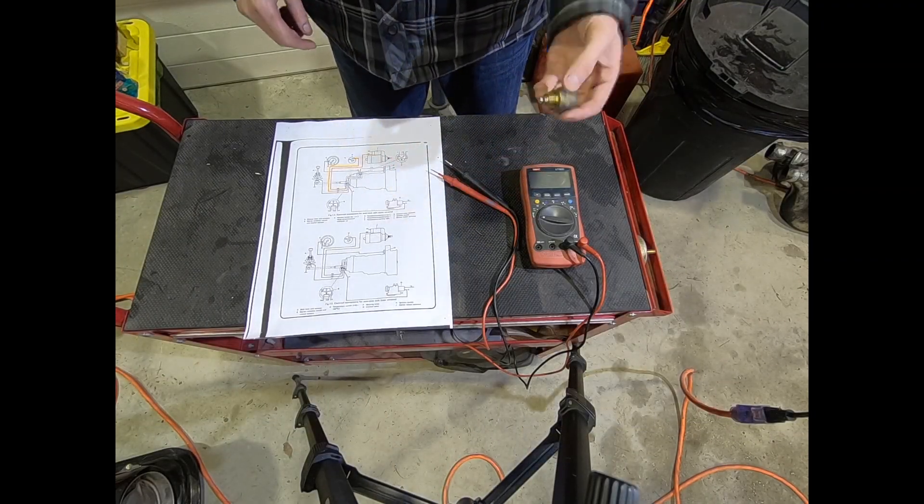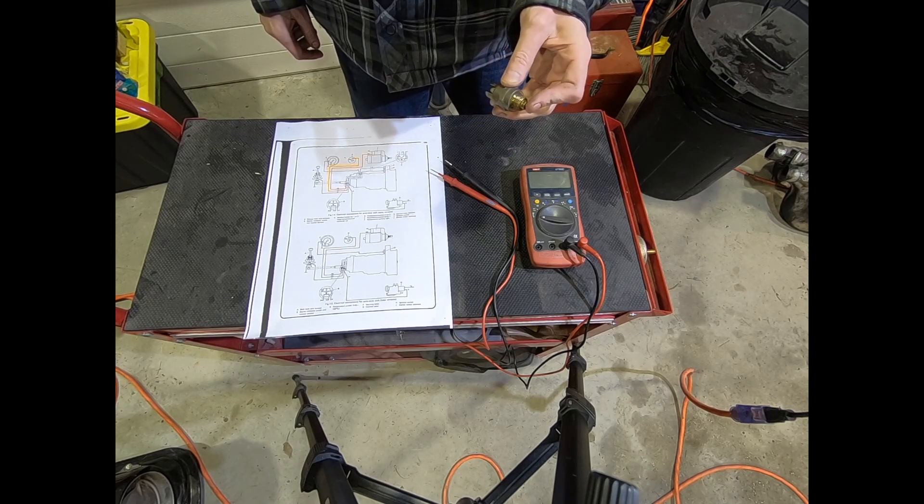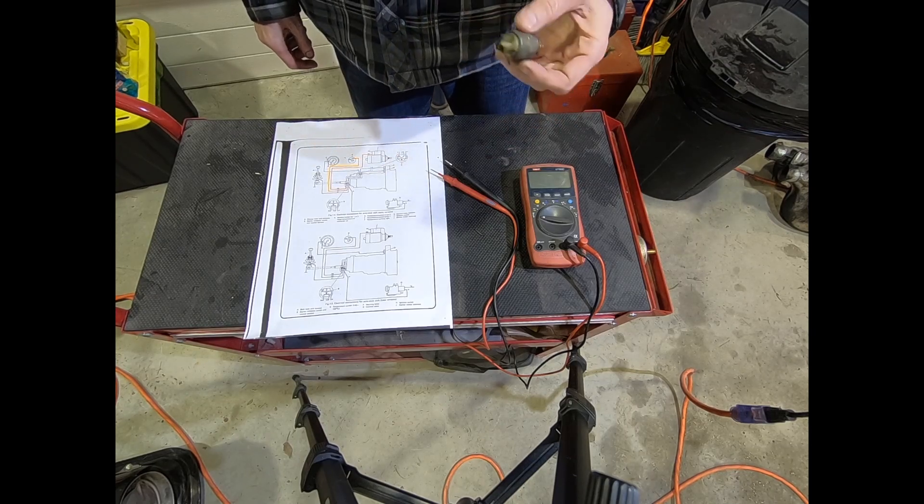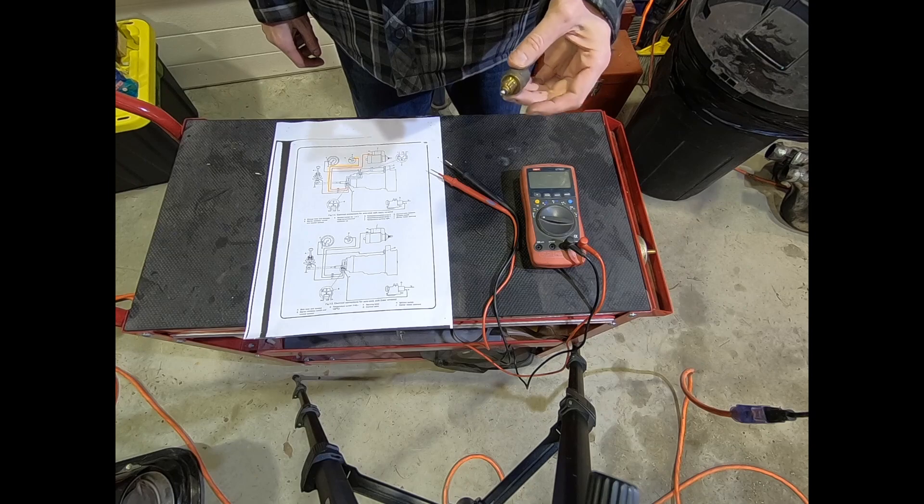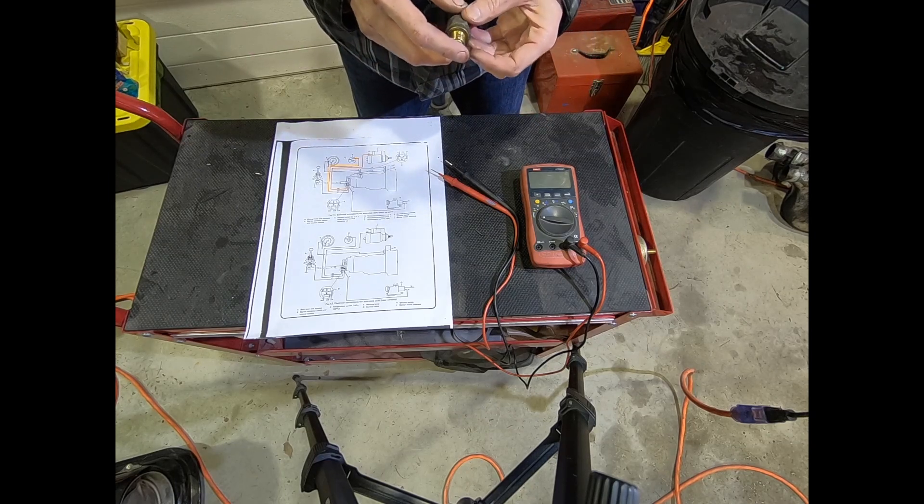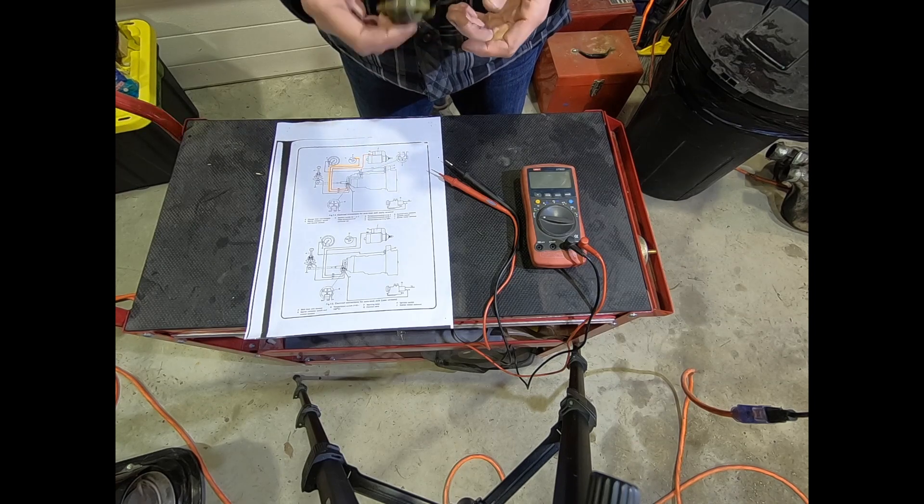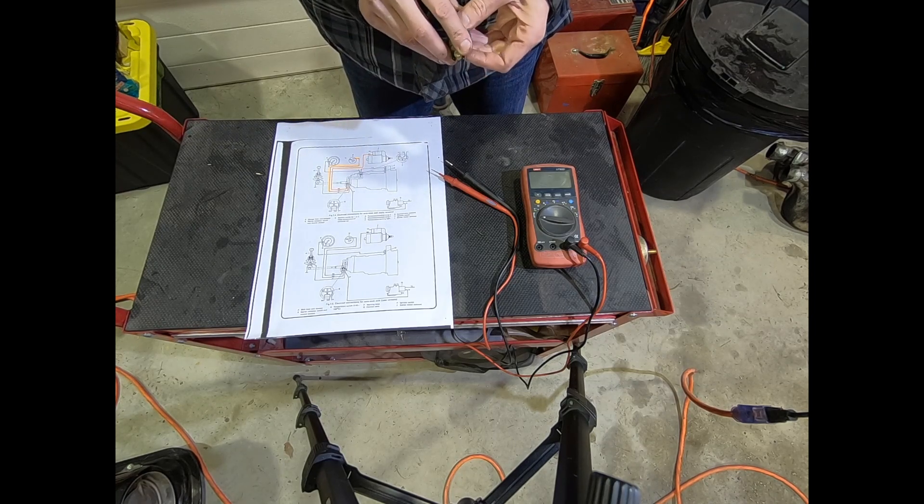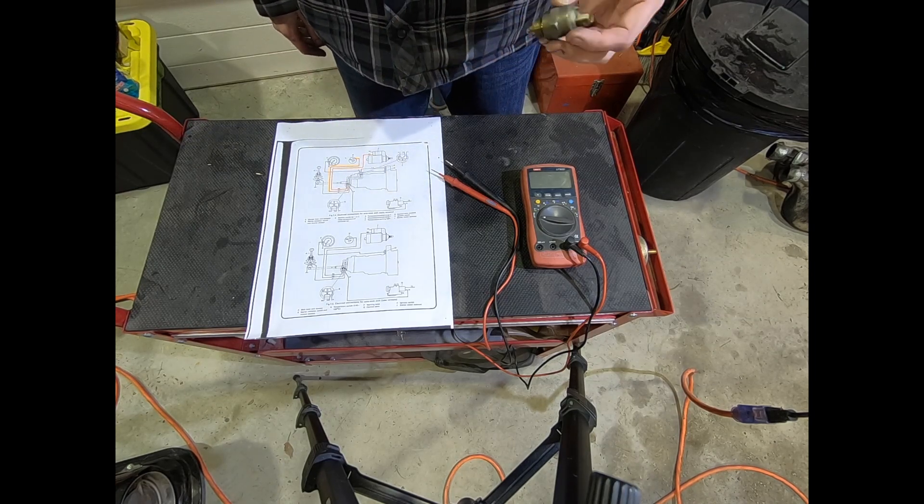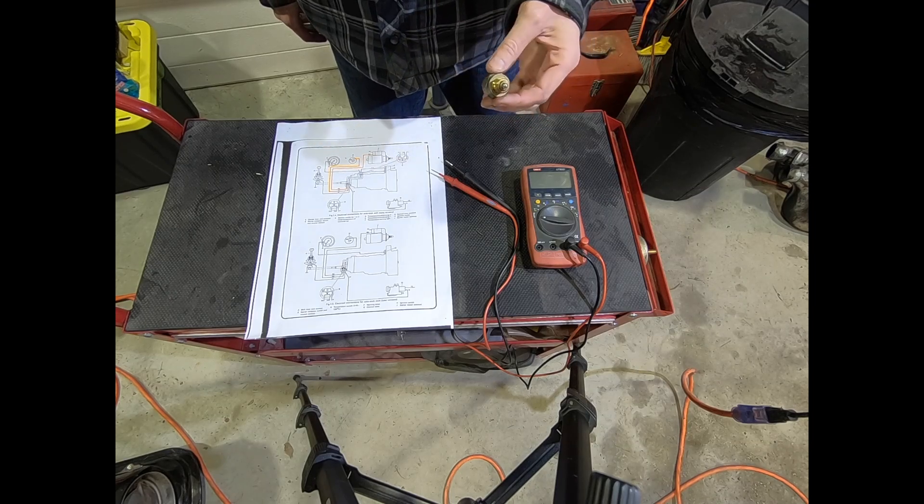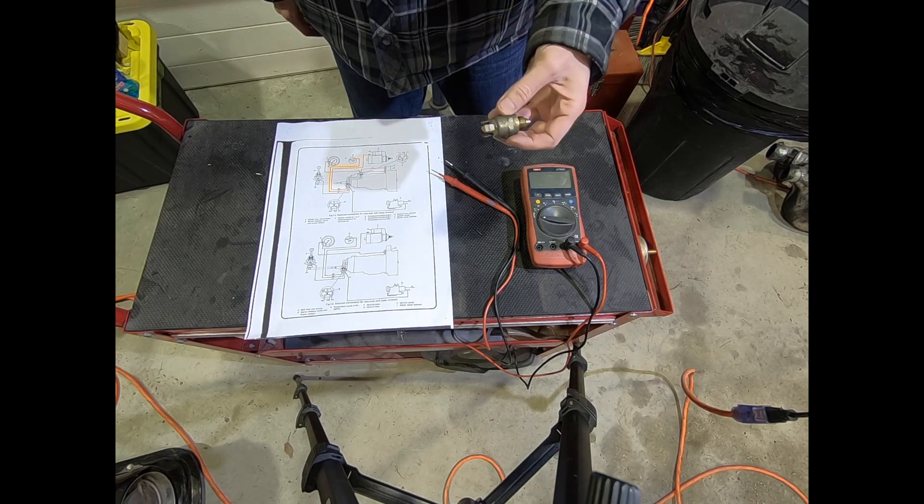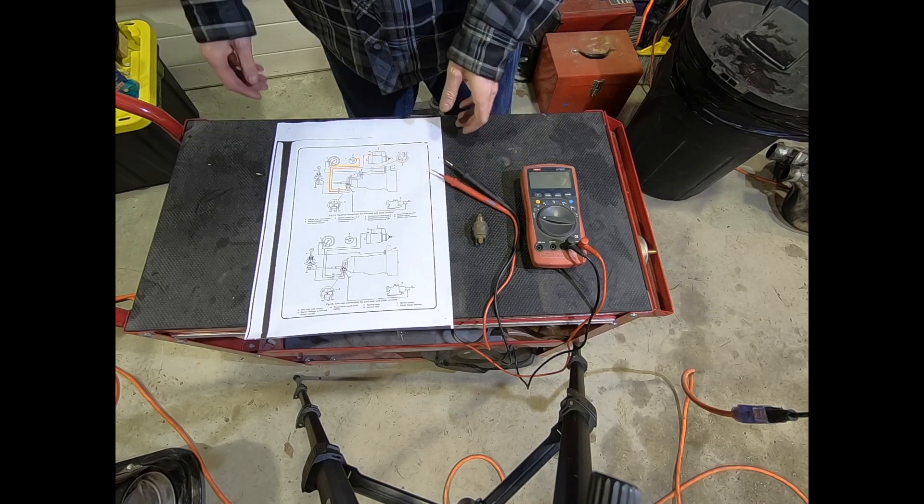We're going to show you how to test your neutral safety switch. As we mentioned, when we got our AutoStick, our switch wasn't working so it had been bypassed. Basically they connected two wires together, bypassed this altogether so the car could start in any gear. Obviously that can be problematic. So we're going to show you how to quickly do a test.